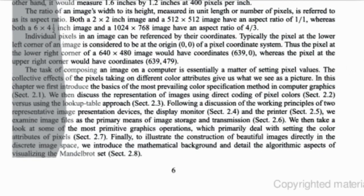Individual pixels in an image can be referenced by their coordinates. Typically, the pixel at the lower left corner of an image is considered to be at the origin (0,0) of a pixel coordinate system.